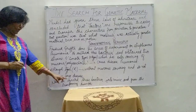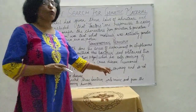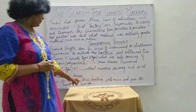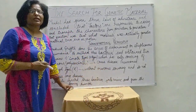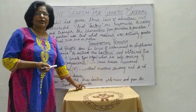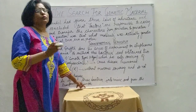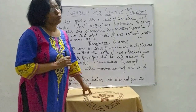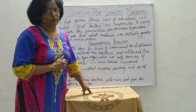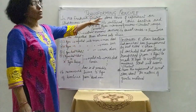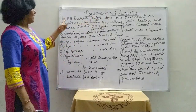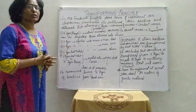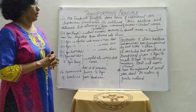He injected these bacteria into mice and concluded that something — the transforming principle — is responsible to carry and transfer characters from generation to generation. In 1928, Frederick Griffith did a series of experiments on Streptococcus pneumoniae, which causes the disease pneumonia.